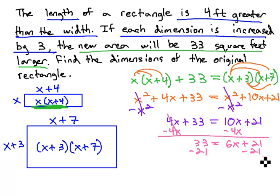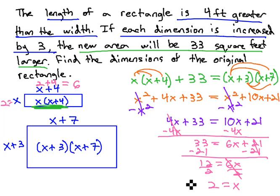Subtract 21, and we end up with 12 equals 6x. And finally, divide both sides by 6, and x is equal to 2. That width x is equal to 2. The other dimension on the rectangle is x plus 4, or 2 plus 4, which is 6. So we really have a 2 by 6 rectangle.